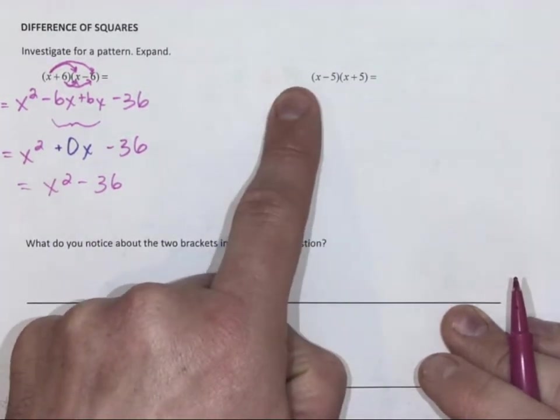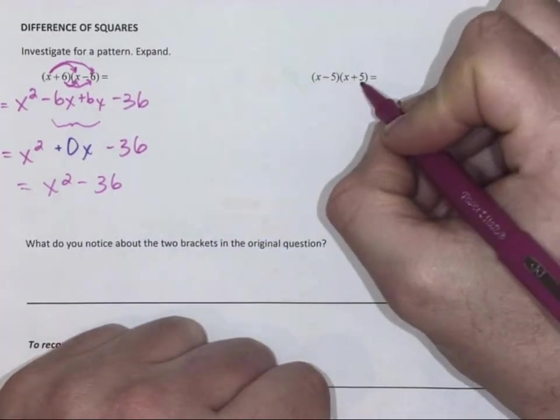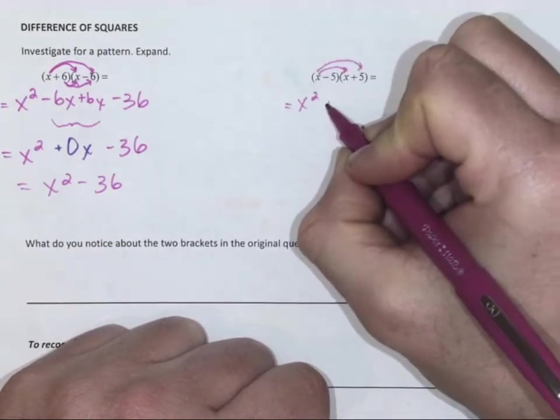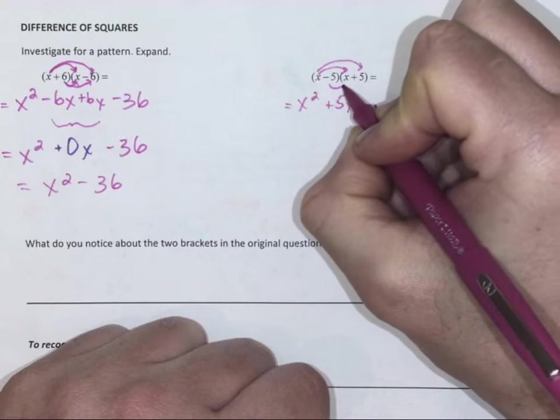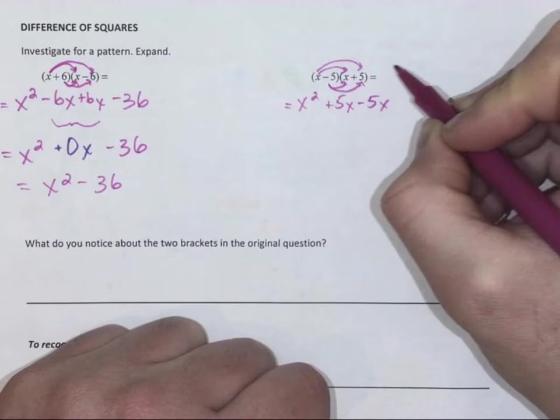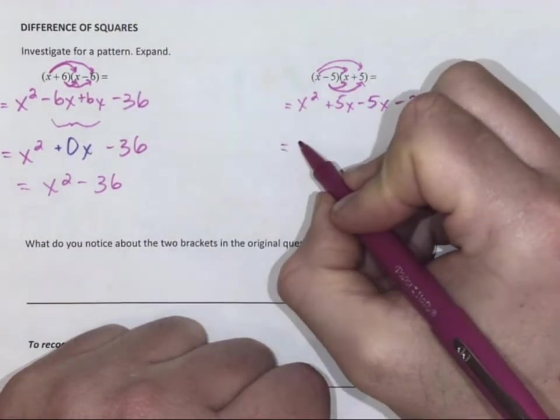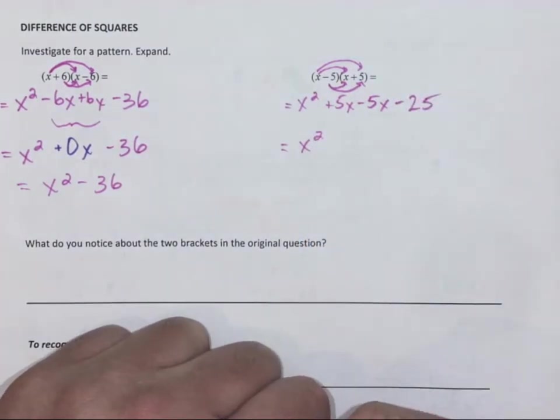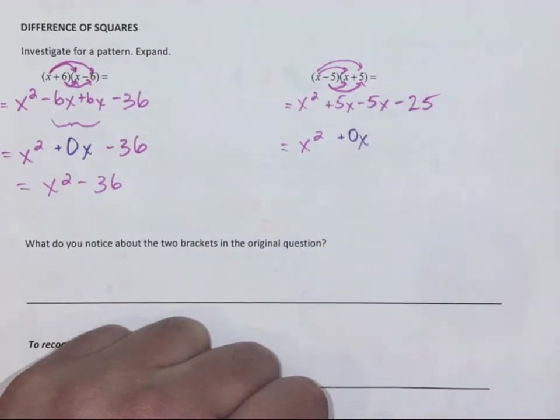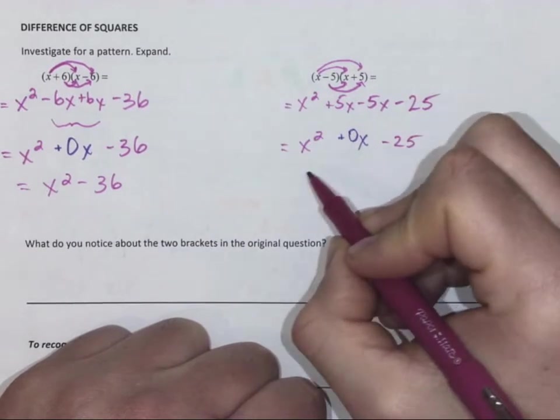Again, same terms in our binomial times our binomial. Different signs. x times x is x squared, x times 5 is 5x, negative 5 times positive 5 is negative 25. 5x minus 5x is zero x's. Again, we don't have to show that.